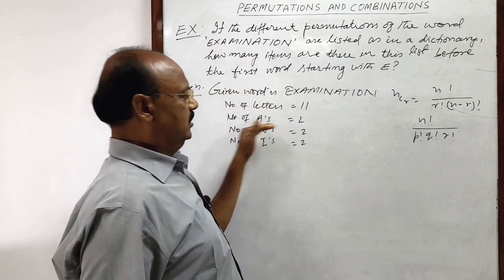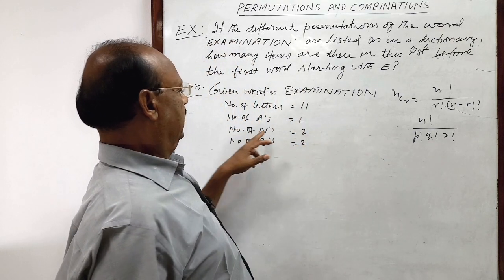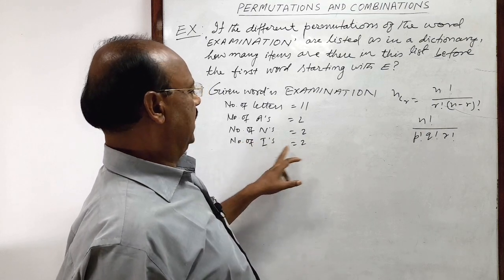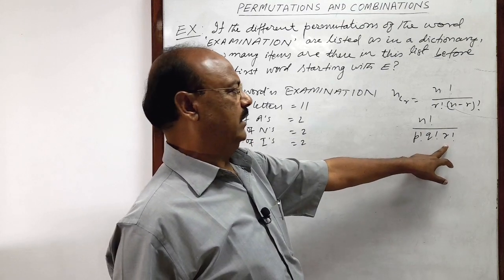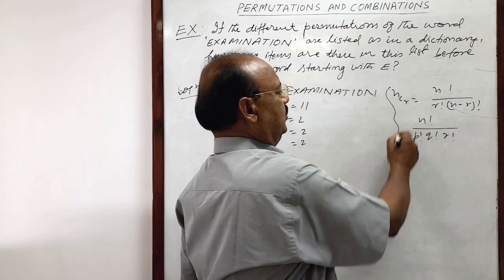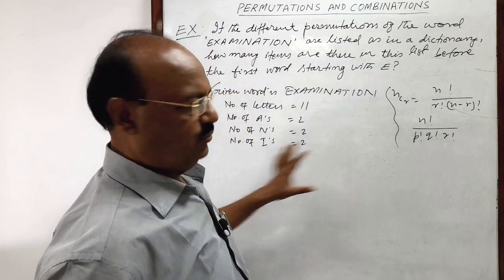Like A is 2, so 2 factorial. N's are 2, so 2 factorial. N's are 2, so 2 factorial. Number of I's are 2, so in denominator 2 factorial. So these are some formulas which we can use wherever it will be required here.